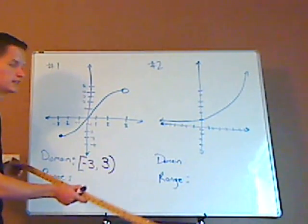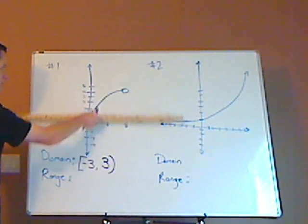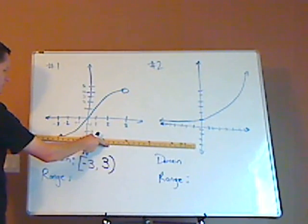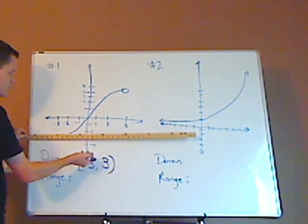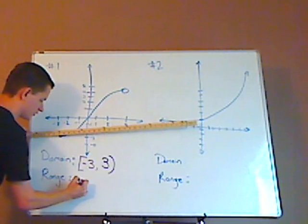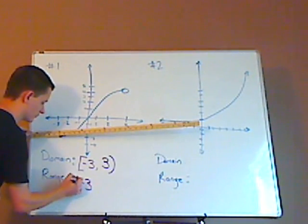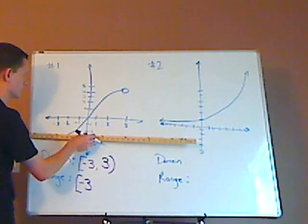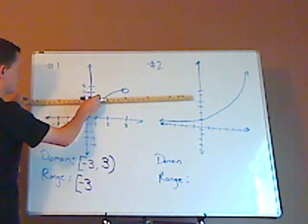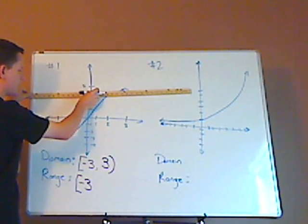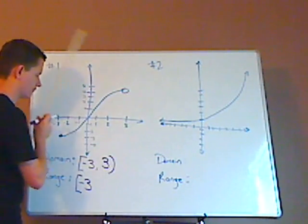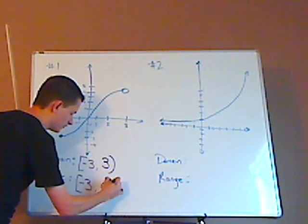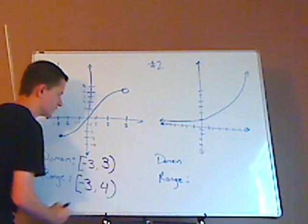For its range, same thing, but it's all possible y-values. It looks like it's starting at negative 3, so it goes down and then up. That's negative 3, and negative 3 is included. It goes up and stops at positive 4, and that positive 4 is not going to be included, so it would be parentheses.